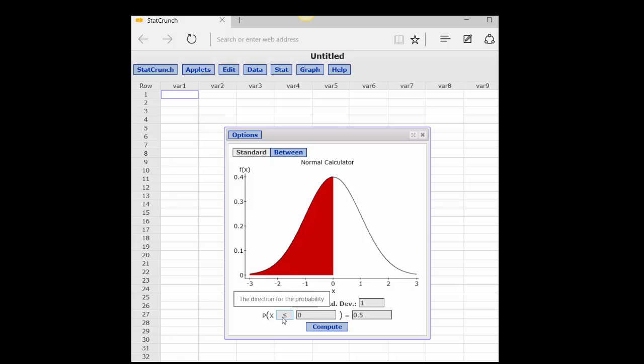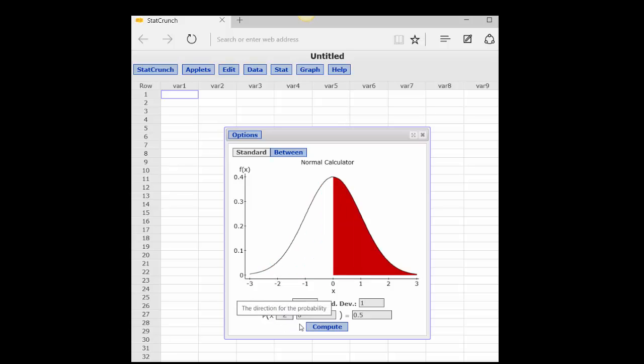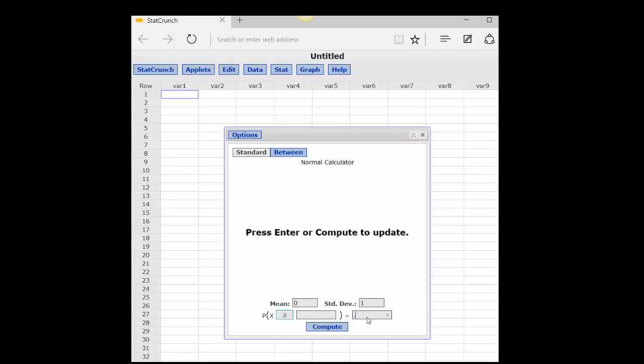Right now it's a left-tailed test. Let's do a right-tailed test, and I want the alpha to be .05, which is a 95% confidence level, so we'll put in .05, and then I hit Compute.